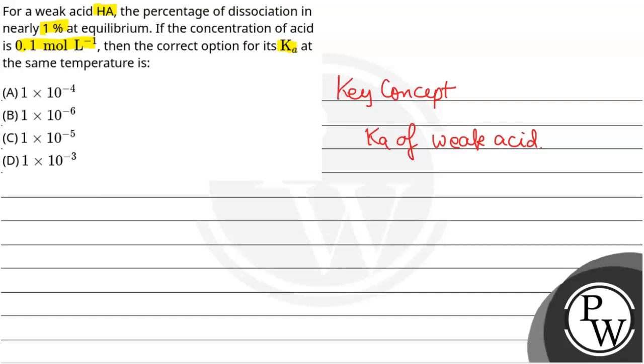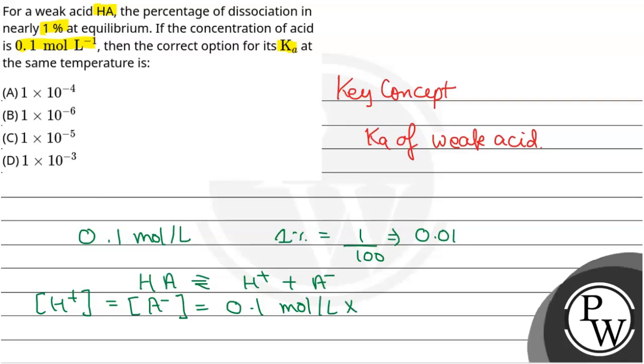The concentration is 0.1 mol per liter and dissociation is 1%. If we want to write 1% in decimal form, it becomes 0.01.